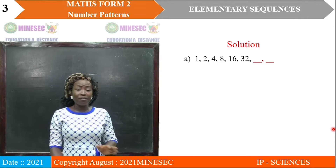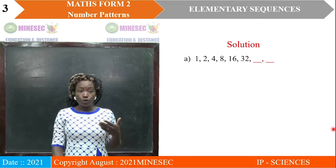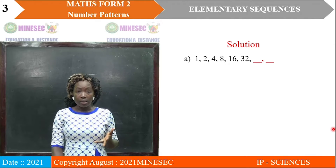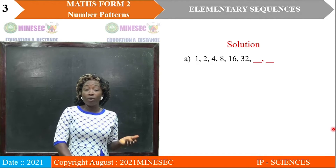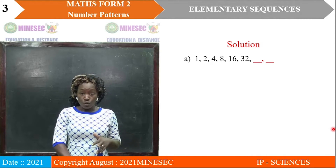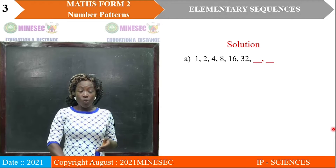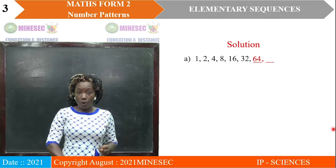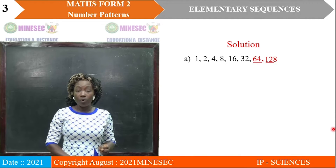Now, the first thing you have to do is bring out the rule. Looking at sequence A: 1, 2, 4, 8, 16, 32. What is happening here? You see that we are multiplying the previous term by 2 to get the next term. So we multiply 32 by 2 to give 64, and multiply 64 by 2 to get 128.